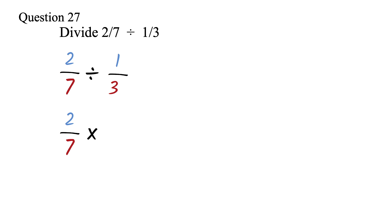The rest is just multiplication like in the previous question. We will multiply the numerators. 2 times 3 to get 6. Then we will multiply the denominators. 7 times 1 to get 7. So our final answer is 6 over 7.